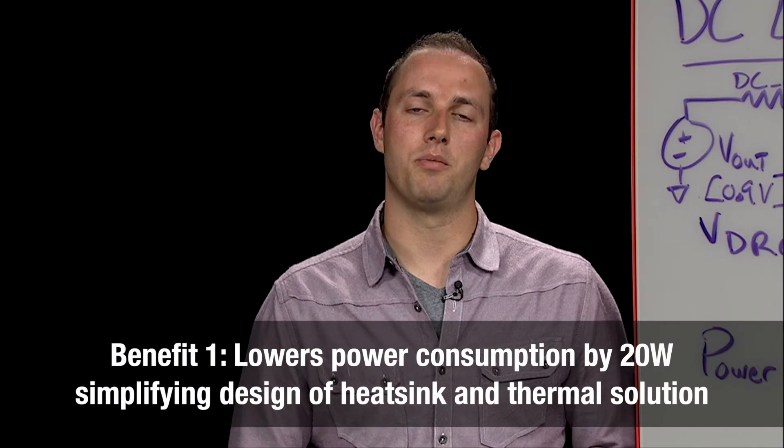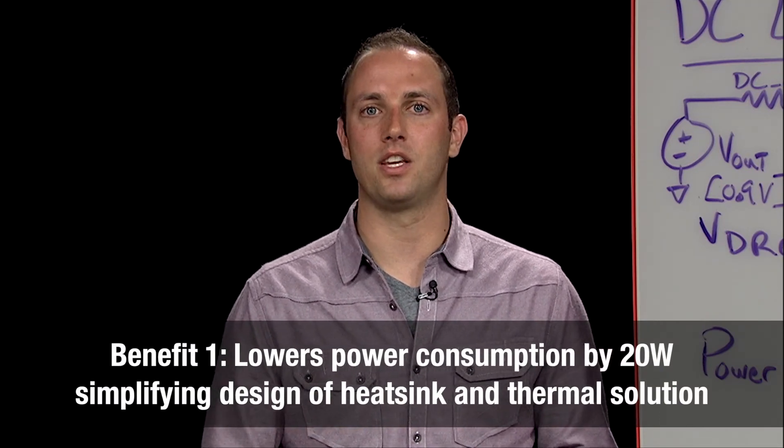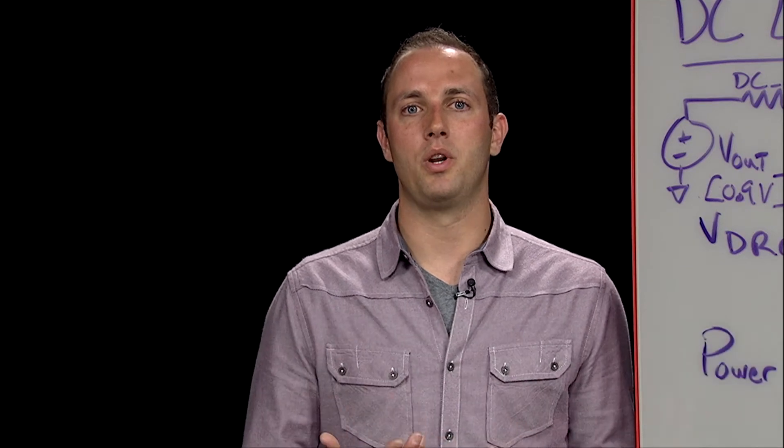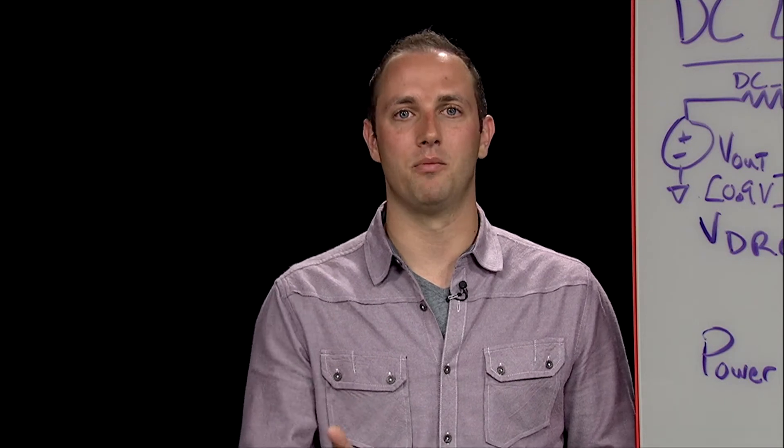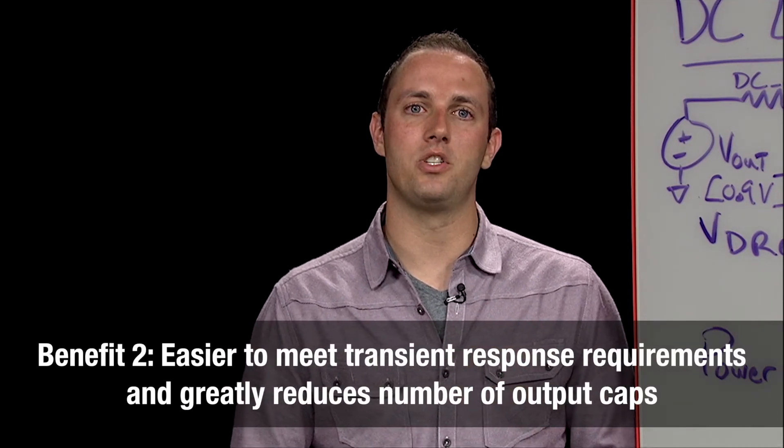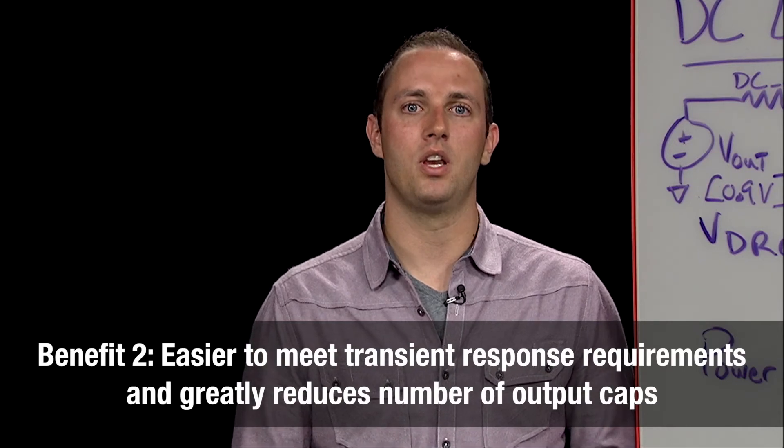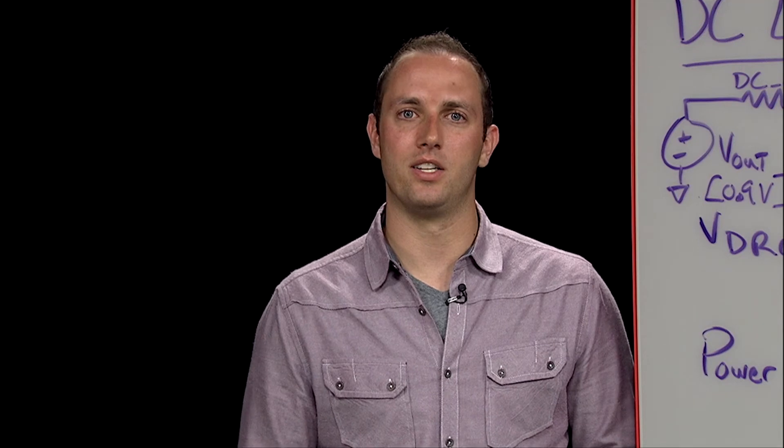Benefit one, it lowers the power consumption of the processor by 20 watts, simplifying the design of a heat sink and thermal solution. This 20 watt difference is not dissipated by the buck regulator. It's just simply not drawn from the input supply. It's an important thing to note. Benefit two of a DC load line is it makes it much easier to meet the transient response requirements and greatly reduces the number of output caps. We'll dive deeper into that later on into the design, though.